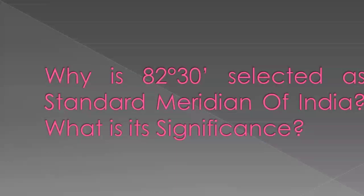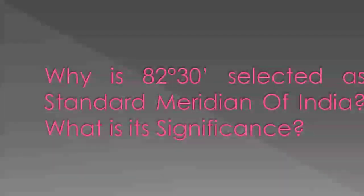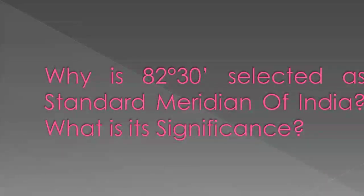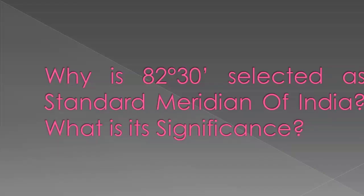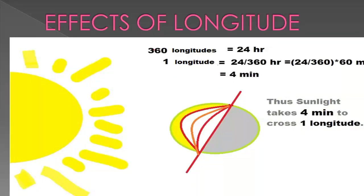The question is: why is 82.5 degree east selected as the standard meridian of India, and what is its significance? Let's first see the basics of longitude.